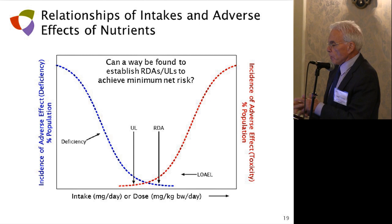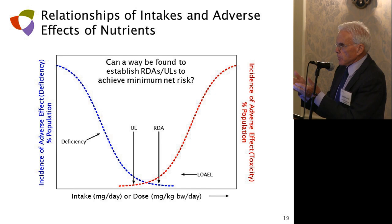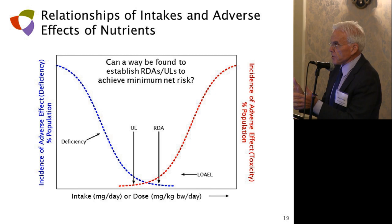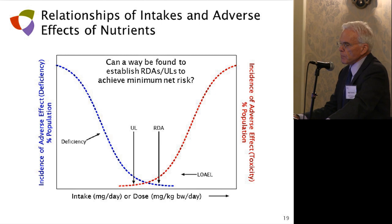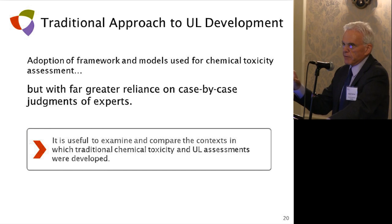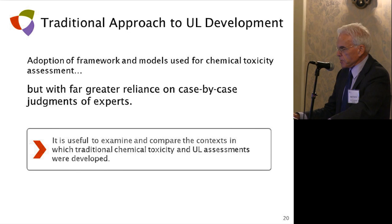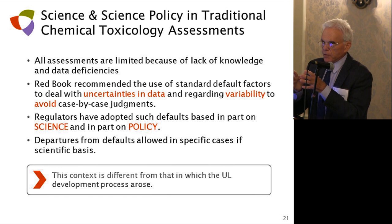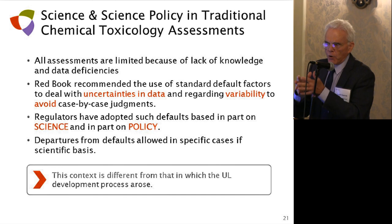So imagine this in the nutrient situation. The question you need to ask is: how do we make a DRI decision that leads to the smallest net risk for the population? That's the problem formulation. I want to say something about the UL development framework, because it came out of a different setting than the framework for toxicity assessment. The Red Book emphasized a need for standardized default factors and uncertainty factors in the risk assessment process in order to avoid case-by-case manipulation of the assessment where the science was incomplete.